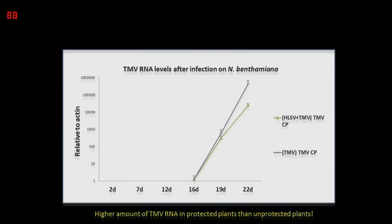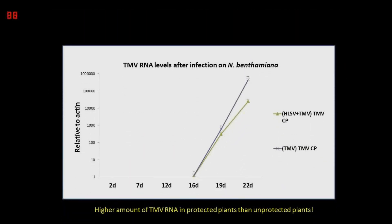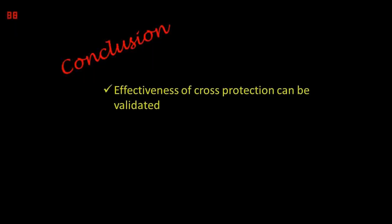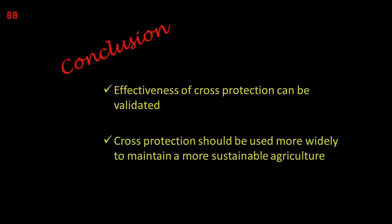This graph shows the TMV coat protein RNA levels in the cross-protected and unprotected plants. There is a significantly lower amount of TMV RNA in protected plants than TMV plants, which means that TMV replication is repressed in protected plants. From our results, we can validate the effectiveness of cross-protection against severe strains of plant viruses, and it can be used more widely to maintain a more sustainable agriculture for the future.